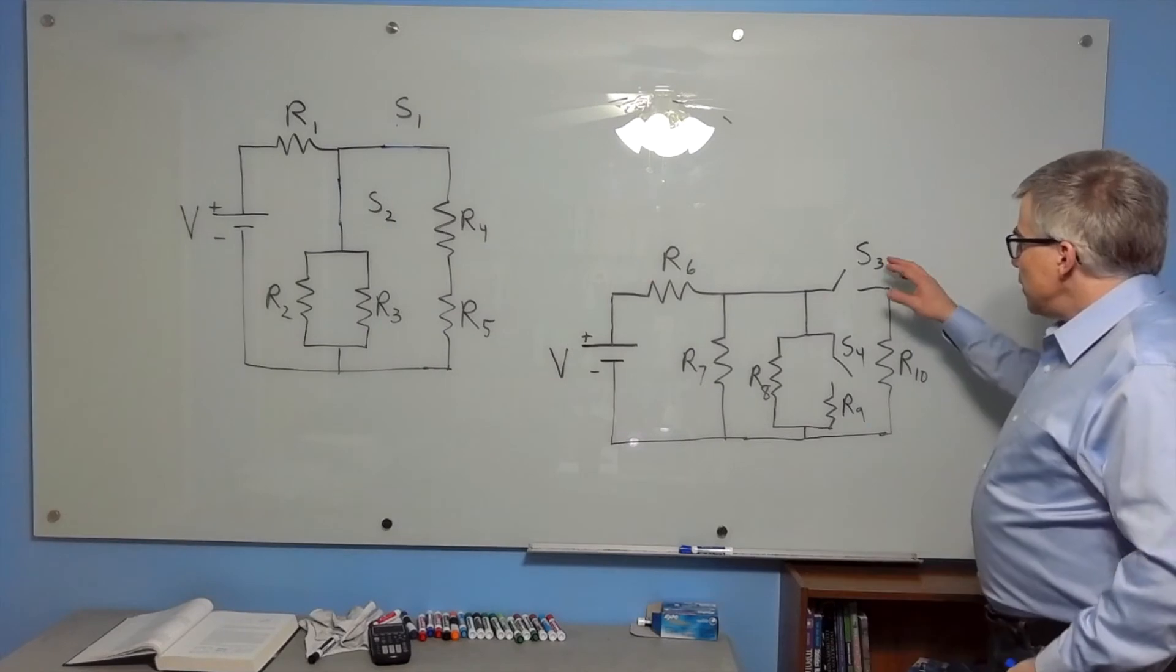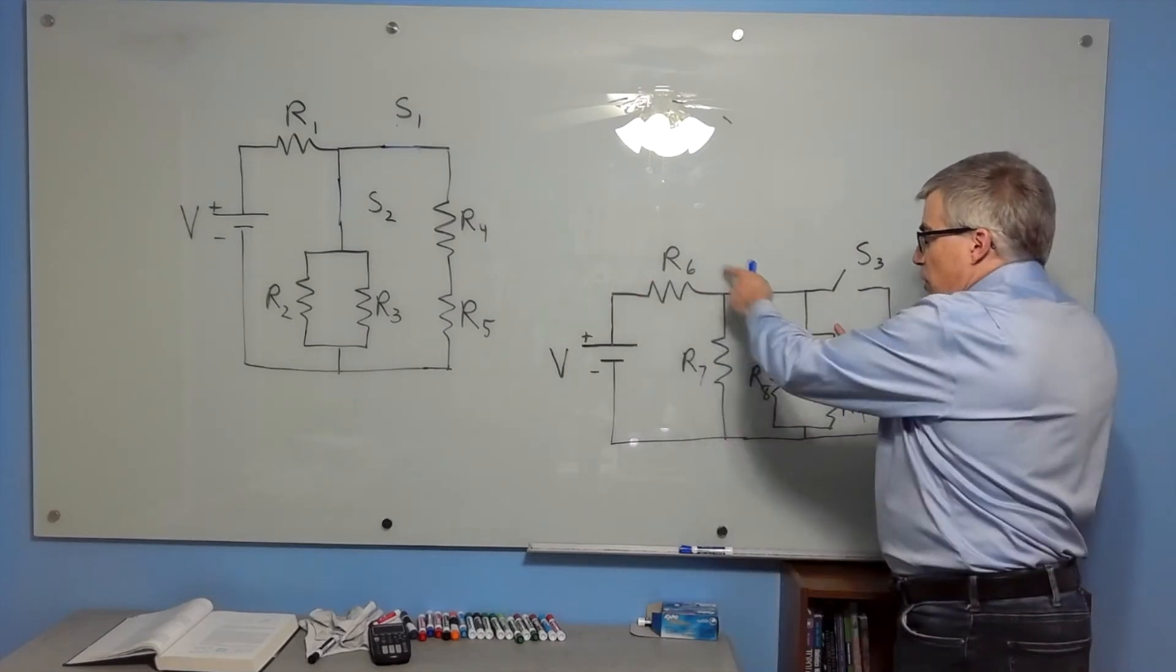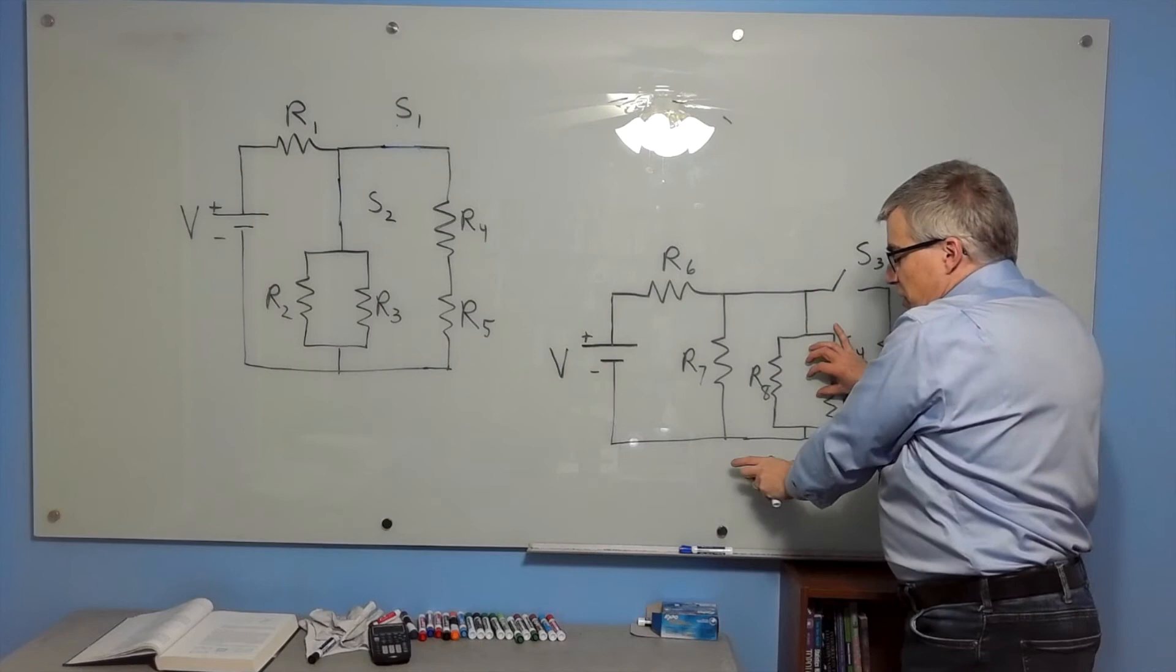Now for this one, if switch three and switch four are both open, and we have R6 followed by R7 and R8 in parallel,